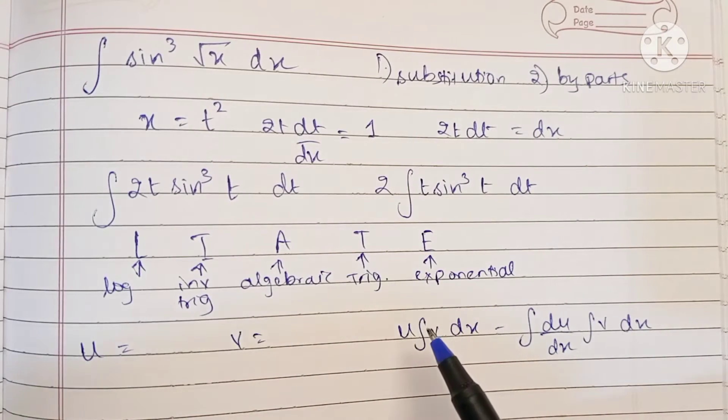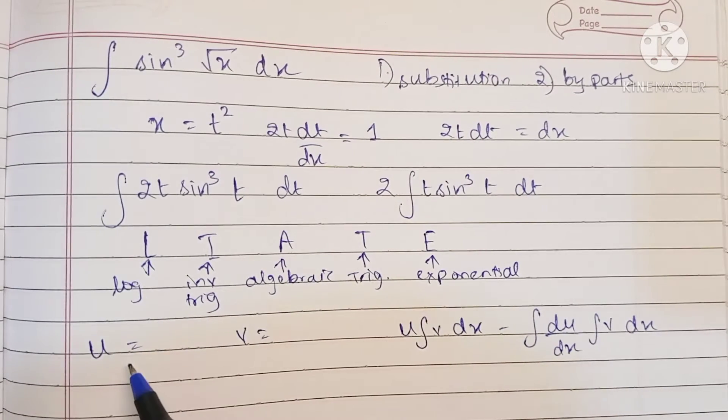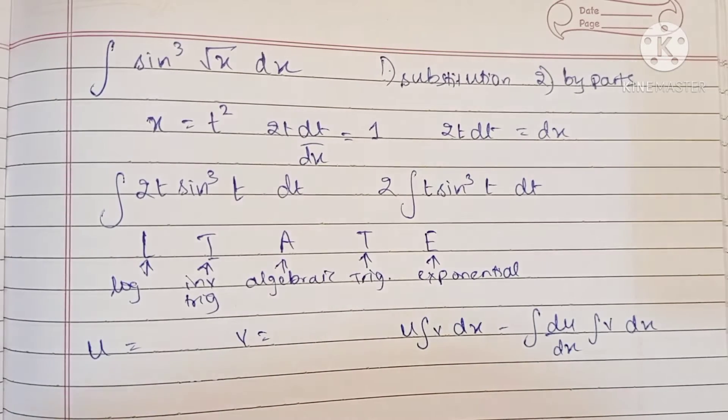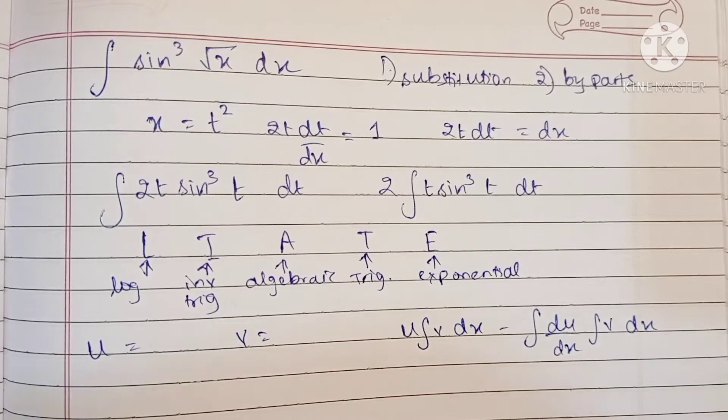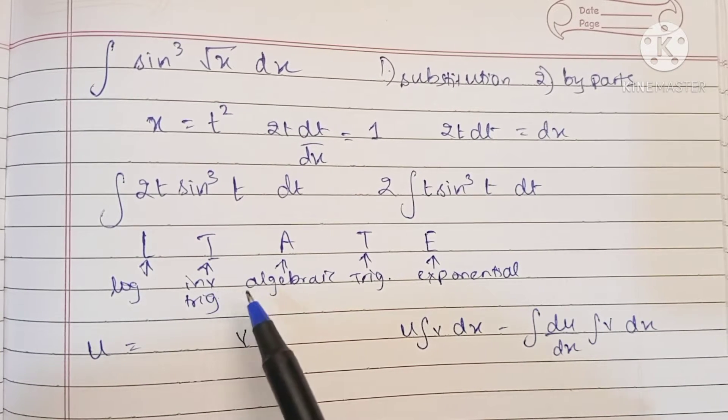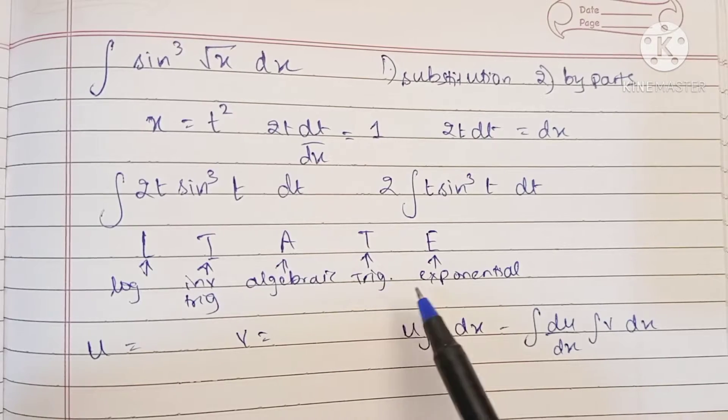The LIATE rule helps us decide which term we should keep as u and which term as v, based on which term of the integral is easier to integrate and which term is easier to differentiate. So the order of preference for the first term is log, then inverse trigonometric, then algebraic, then trigonometric, and then exponential.